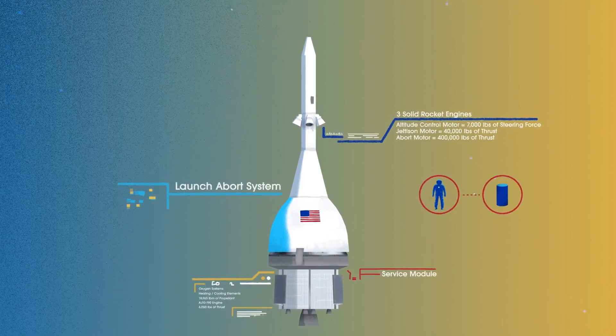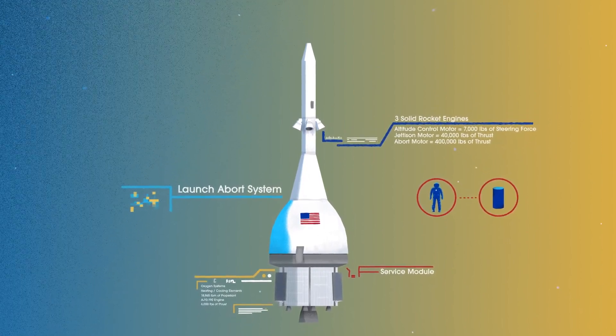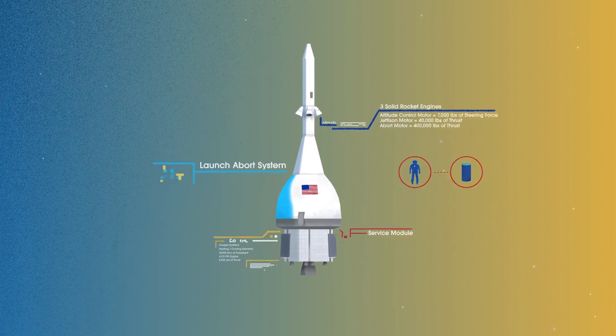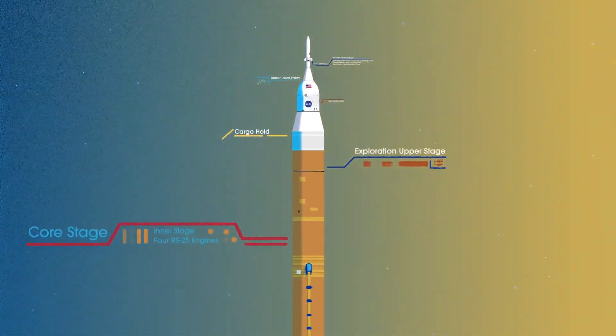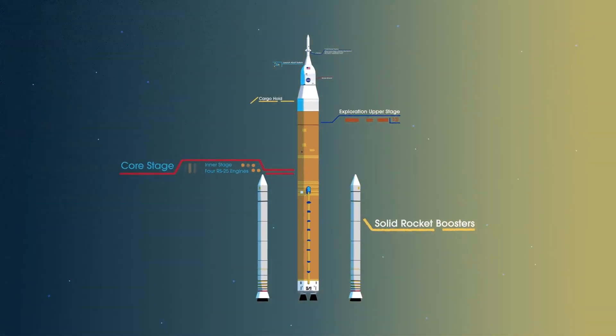To accomplish the task of launching our crew and heavy payloads, NASA is building the Space Launch System, comprising of a cargo hold, an exploration upper stage, a massive core stage, and two extended solid rocket boosters.